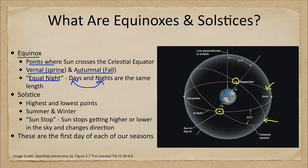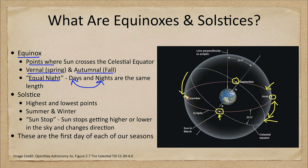The solstices are the two other extreme points on the celestial sphere. While the equinoxes are where the sun crosses the celestial equator, the solstices are the highest point above the celestial equator and the point where the sun is farthest below it. This would be the position of the sun in December — the winter solstice — and in June, the summer solstice.